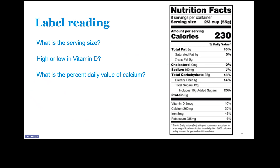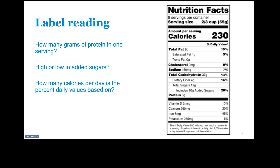What is the serving size? It's two thirds of a cup. Is this high or low in vitamin D? It's 10%, so neither high nor low — right in the middle. What is the percent daily value of calcium? It's 20% for calcium, right underneath the vitamin D. How many grams of protein are in one serving? Three grams. Is it high or low in added sugar? Since it's 20%, this would be considered high. How many calories per day are the percent daily values based on? You can see at the bottom it's 2,000.